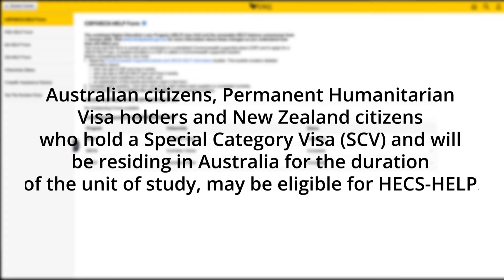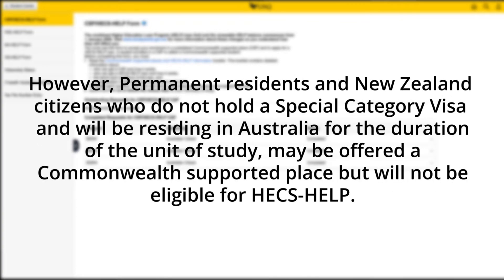Australian citizens, Permanent Humanitarian Visa holders, and New Zealand citizens who hold a Special Category Visa (SCV) and will be residing in Australia for the duration of the Unit of Study may be eligible for HECS HELP. However, Permanent residents and New Zealand citizens who do not hold a Special Category Visa and will be residing in Australia for the duration of the Unit of Study may be offered a Commonwealth Supported Place but will not be eligible for HECS HELP.